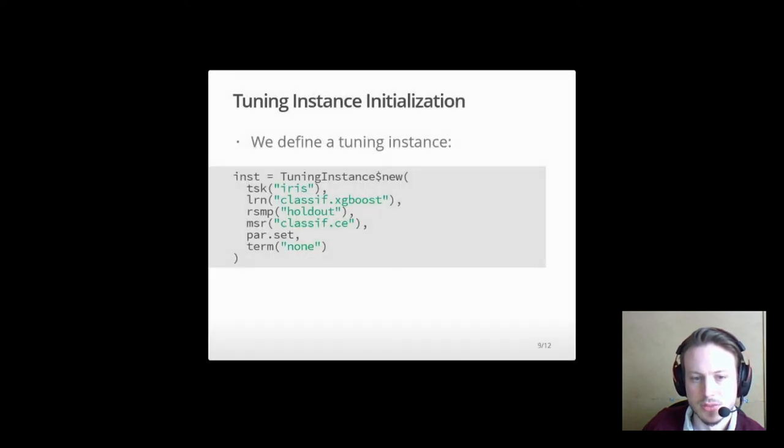Next, we define the tuning instance. Here, we want to fit the task IRIS by setting XGBoost as classifier and using holdout as resampling method. The tuning measure is the classification error and we optimize the hyperparameter of the just defined set.